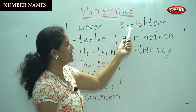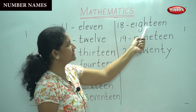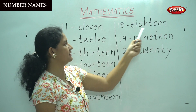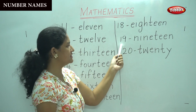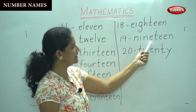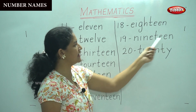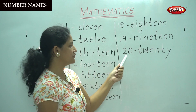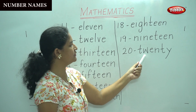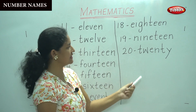18: E, I, G, H, T, E, E, N. 18. 19: N, I, N, E, T, E, E, N. 19. 20: T, W, E, N, T, Y. 20.